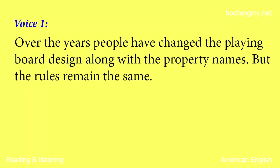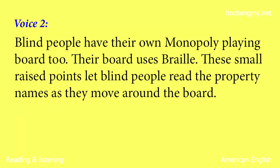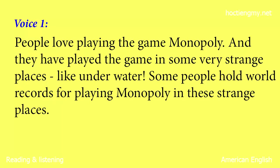Over the years, people have changed the playing board design along with the property names, but the rules remain the same. There is a London Monopoly board, a Thailand board, and an Indonesian board. There are superhero boards, sports team boards, and popular landmark boards. There is even a board representing my city, Grand Rapids, Michigan. Blind people have their own Monopoly playing board too. Their board uses Braille — small raised points that let blind people read the property names as they move around the board.